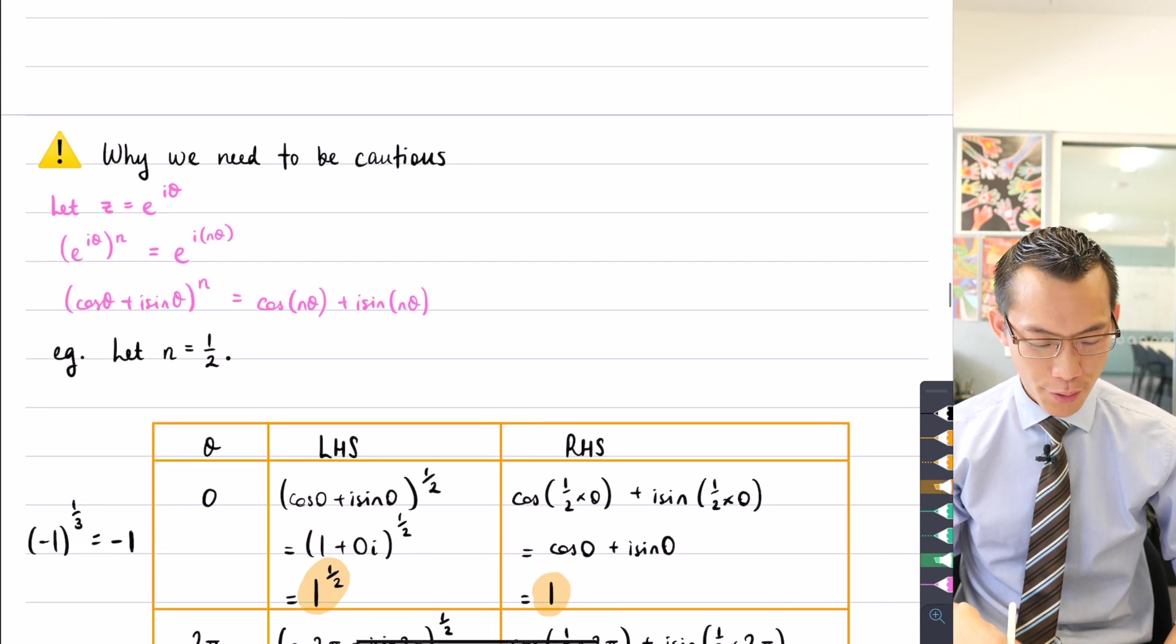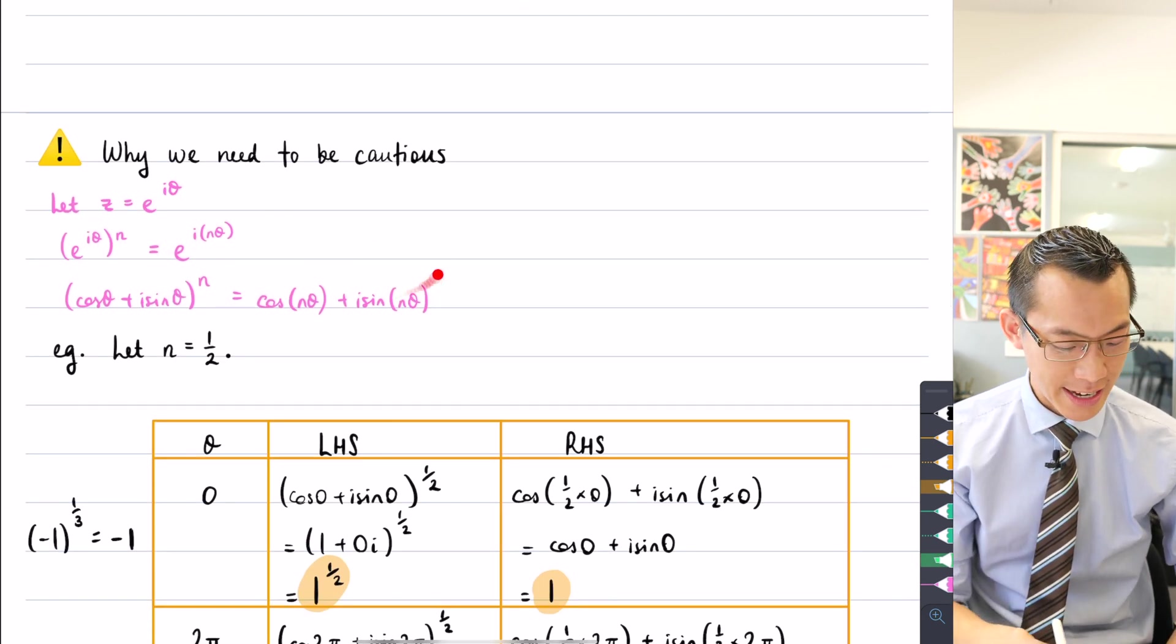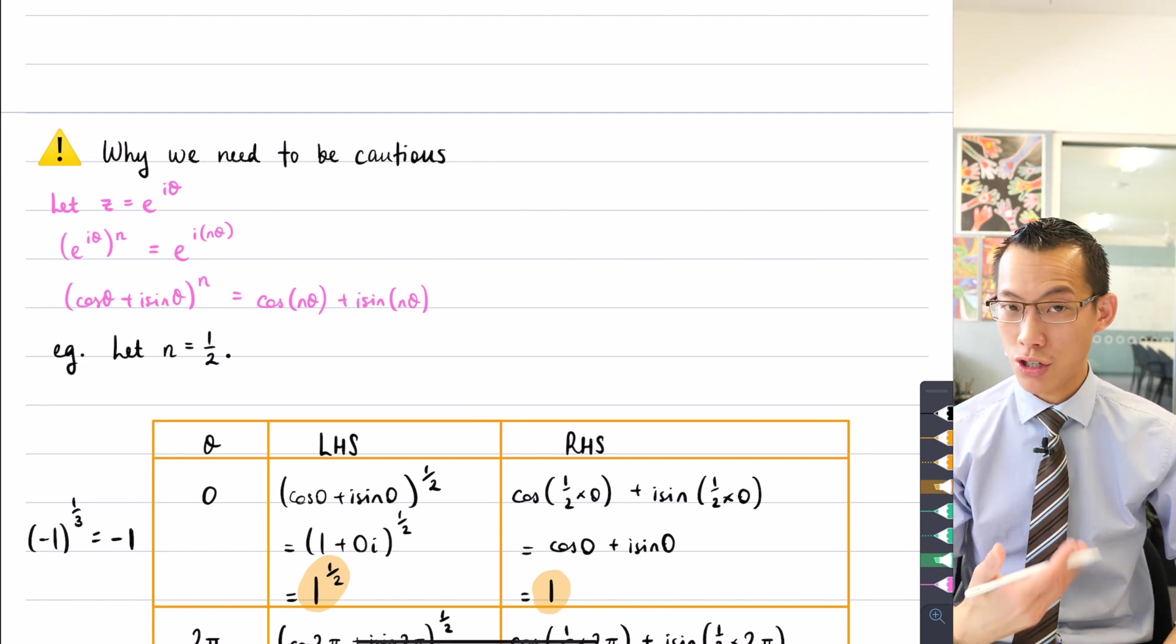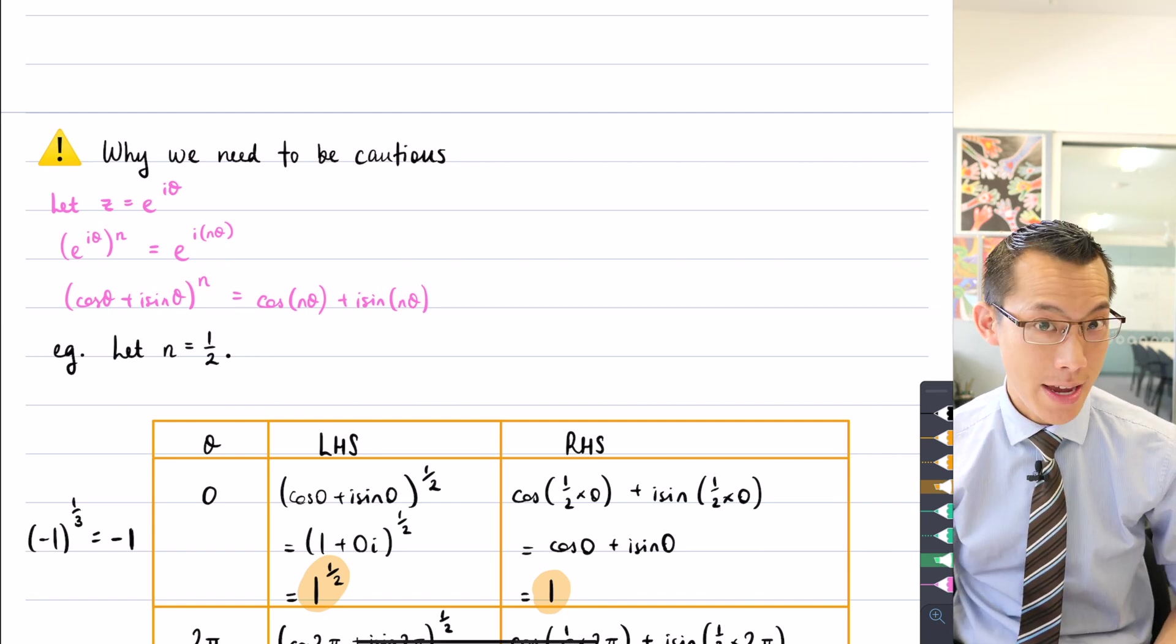So therefore, in fact, our proof for De Moivre's theorem using the exponential form, while valid, it has to come with these caveats. We have to say yeah, cool, it's true, but watch out for the domain of n.